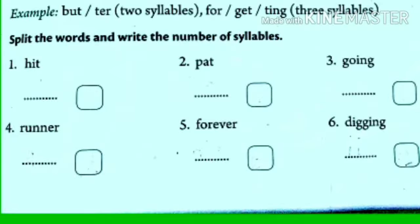Children, yadi kisi word ya part of word mein vowel hai aur wah ek vowel sound create karta hai, that means ki waha ek syllable hai. For example, hit and pat. Each word has one vowel sound, means there is one syllable.